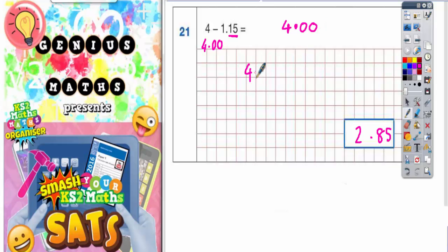Now you could do this. So 4.00 subtract 1.15. So here we go. 0 take away 5 you can't do.